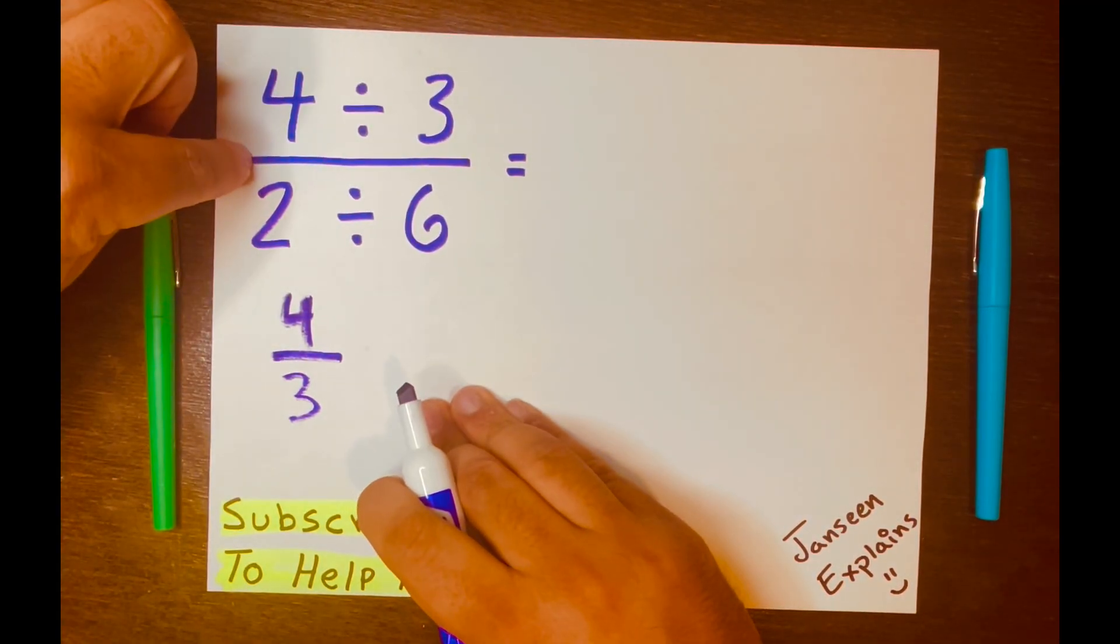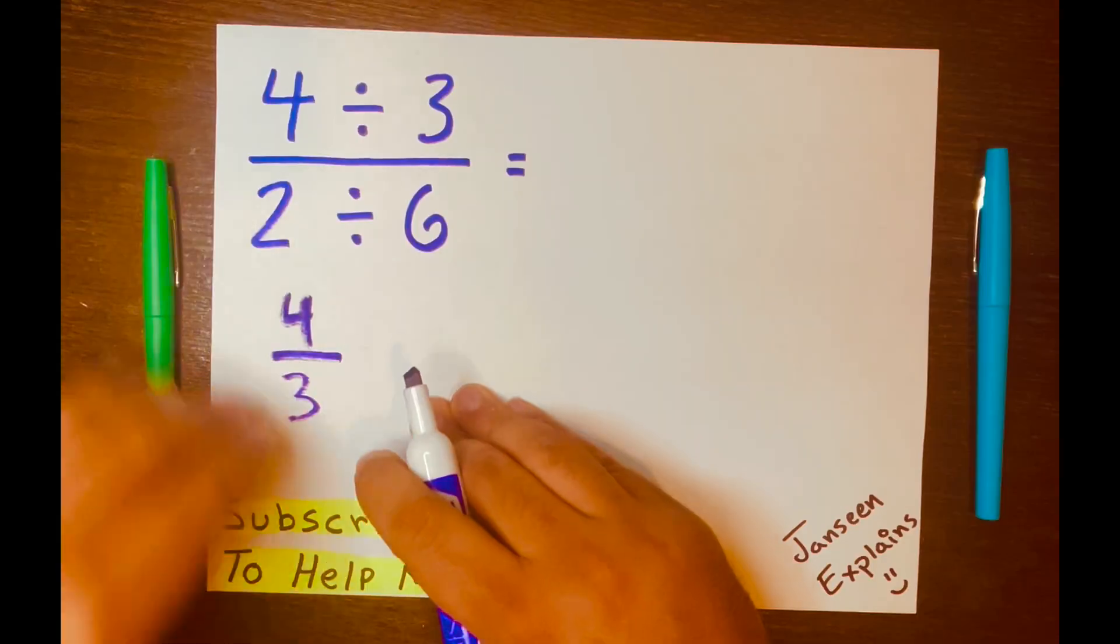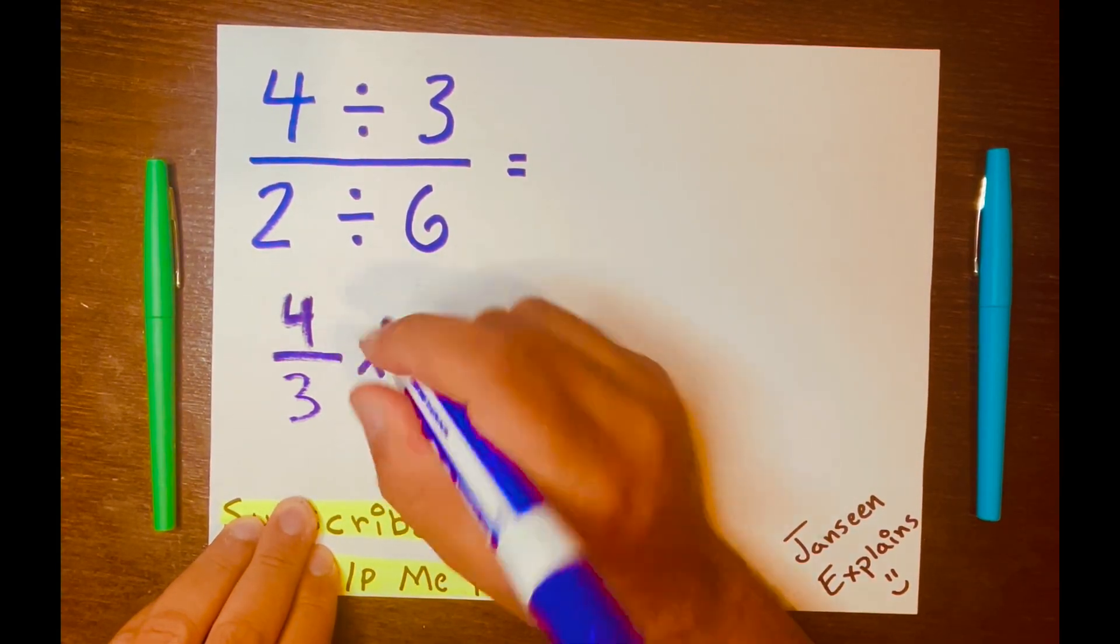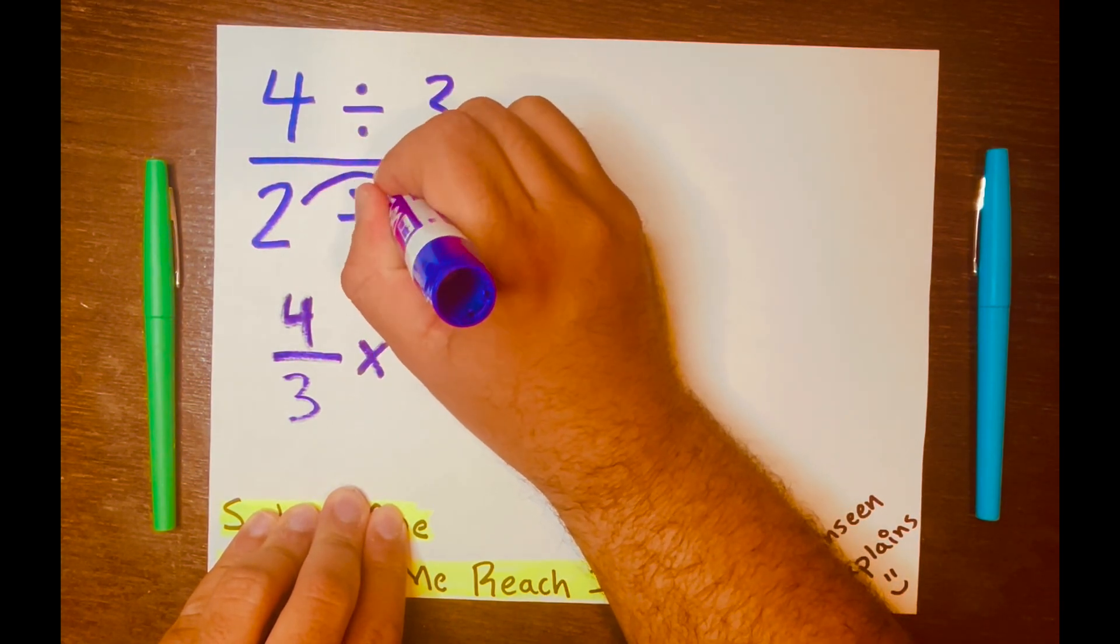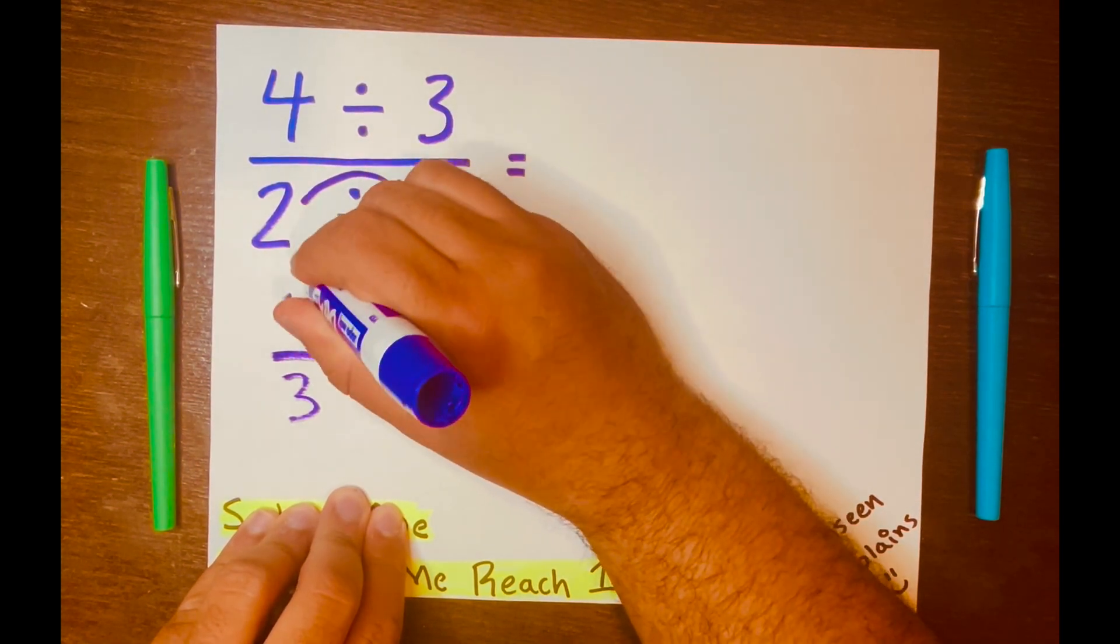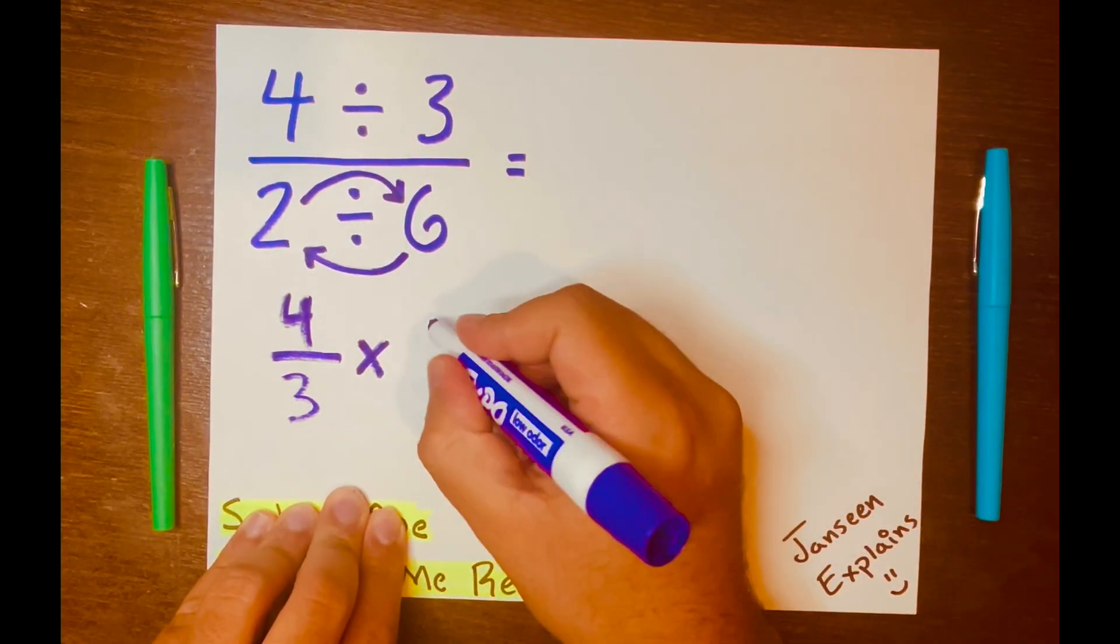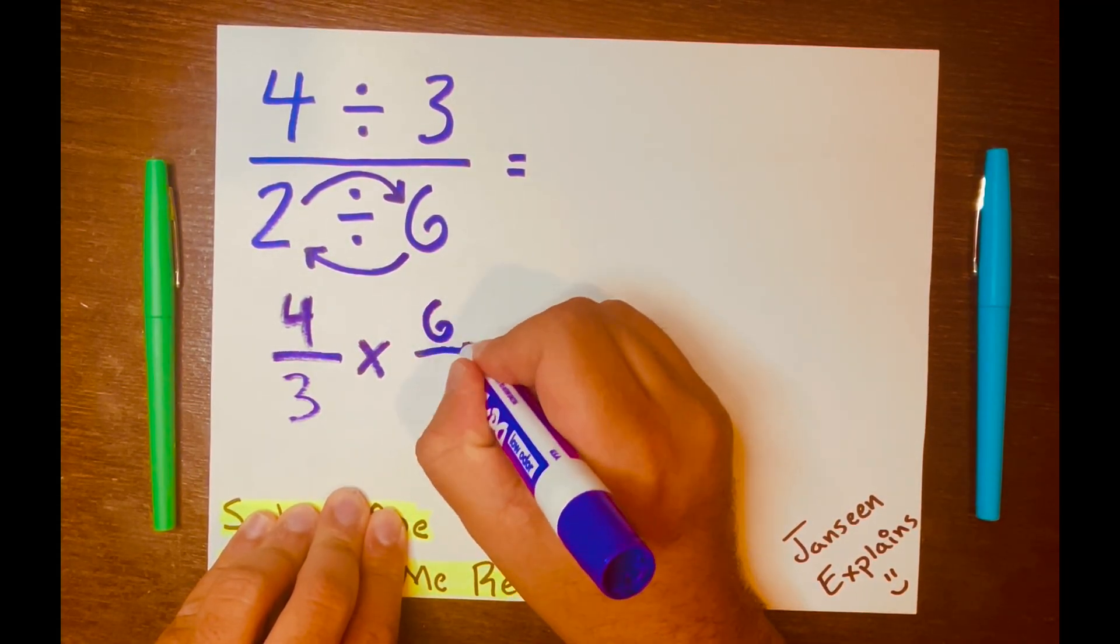And then we want to change this division bar to multiplication. So times. And lastly, we want to flip these numbers. So the two will go here and the six will go there. And it'll be written like this. Six over two.